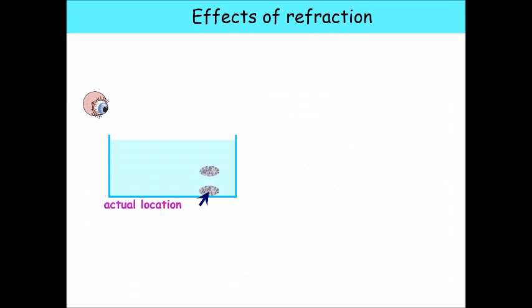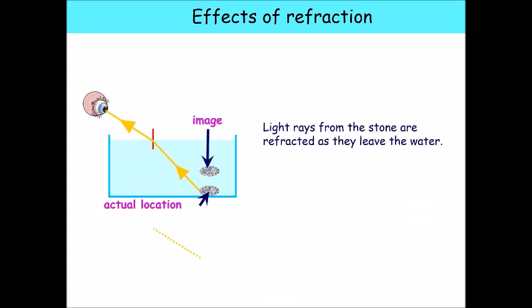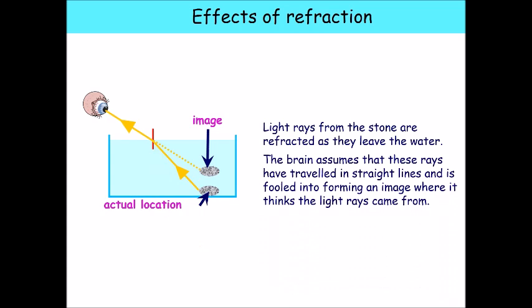Why, when we look at something in glass at an angle, does it not look like it's in the right place? If we have a pebble, what we actually see is that it has moved. Our eye doesn't understand refraction, so we see the actual object in the wrong place. Our brain assumes that the rays have travelled in a straight line and forms an image where it thinks the light ray came from, rather than where it actually came from.